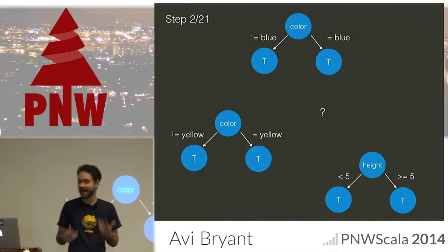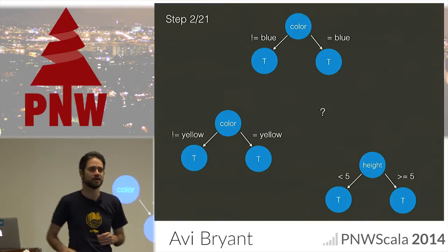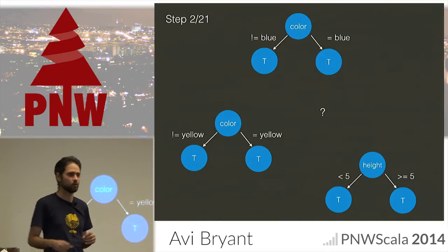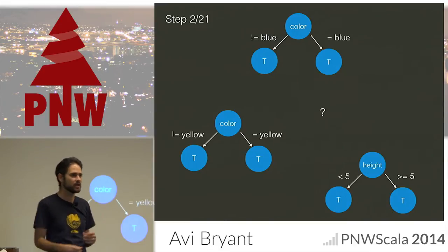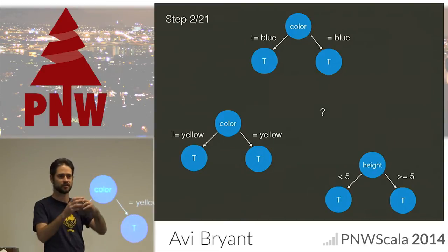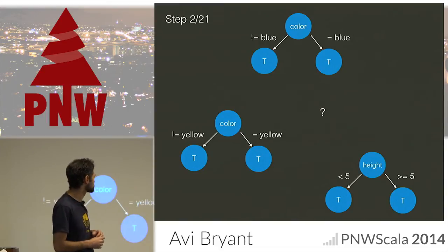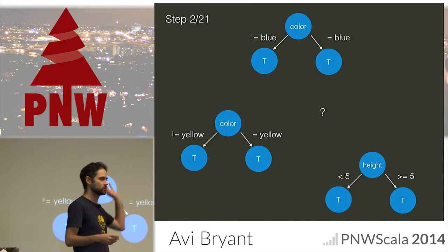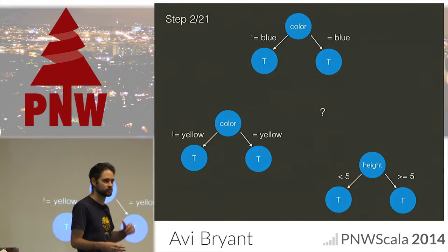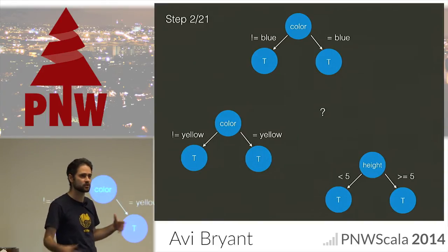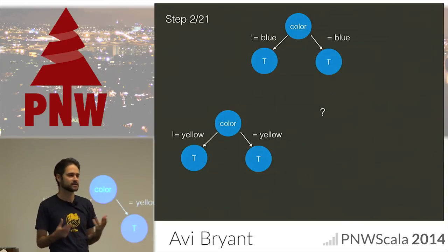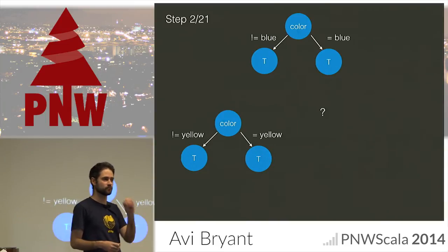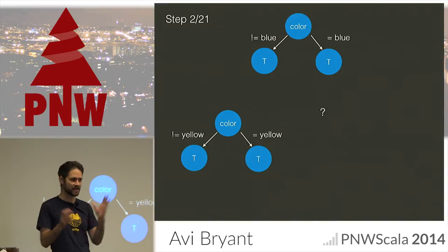The next thing we need to do — and need to recursively do — is choose what's the best way to split from there: what's the best first decision to make? This is a greedy algorithm, so it can't look multiple steps ahead — it's always going to choose what looks like the best split here, the thing that's going to gain you the most information for a later prediction. This might be: look at color, is it blue or not? Or is it yellow? Or don't look at color at all — look at some completely different feature, like is the height greater than five? We need to look at all reasonable possibilities and make a choice for which is the best one.